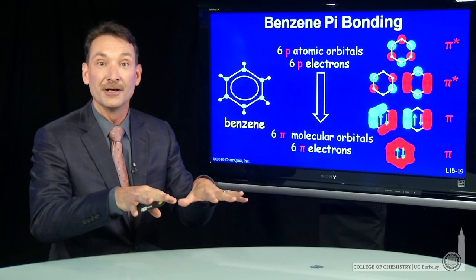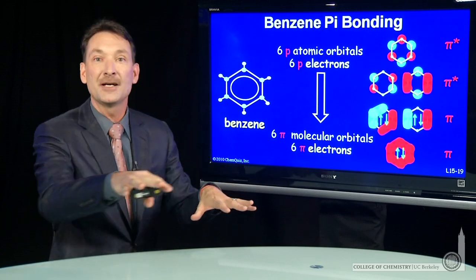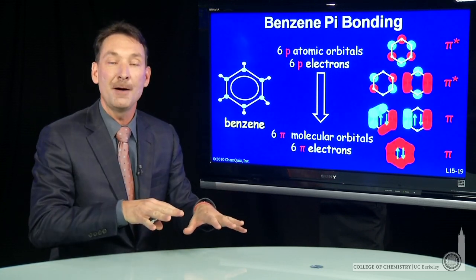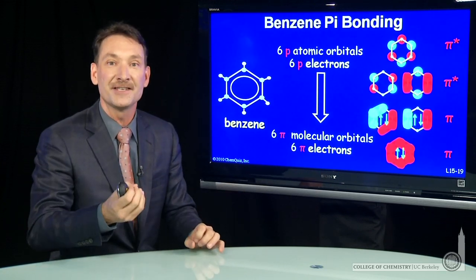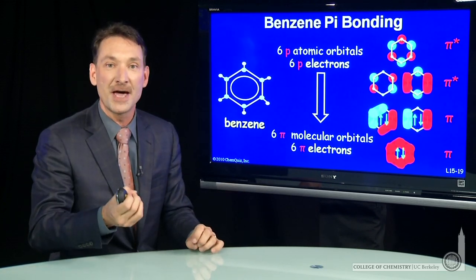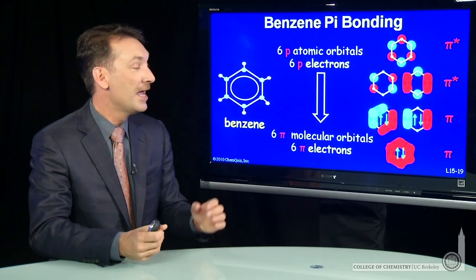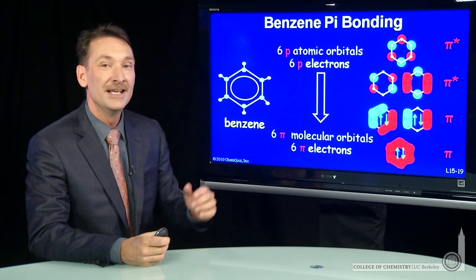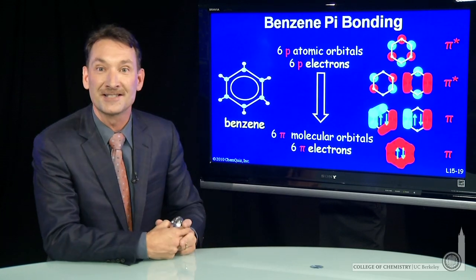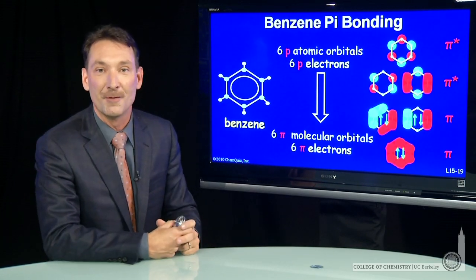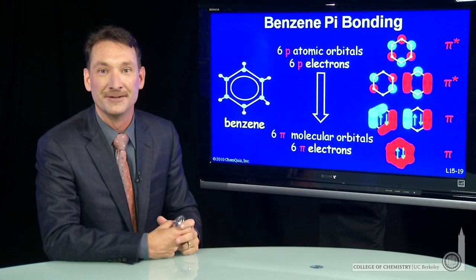Many planar alternating double bond compounds have this extra aromatic stability, and benzene is the classic example of an aromatic compound.